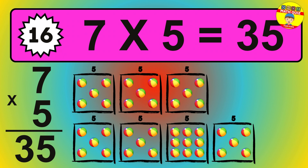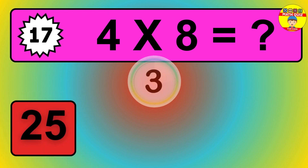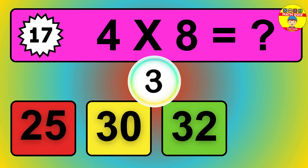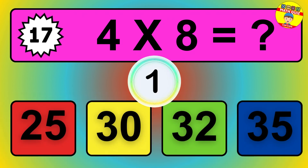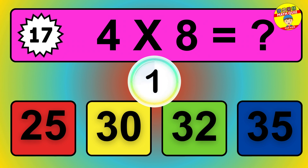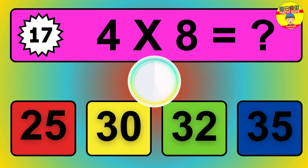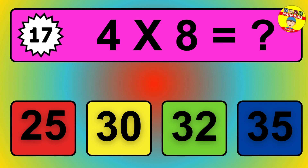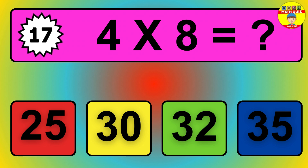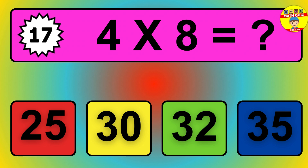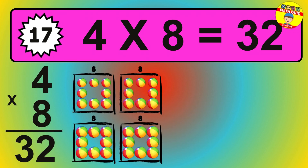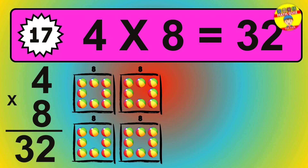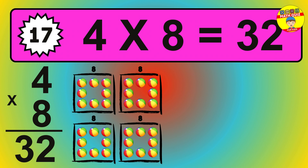Question 19. 8 times 8 equals what? The answer is 8 times 8 is 64. To calculate, we have 8 groups with 8 balls each one. So, how many balls do we have? 64 balls.